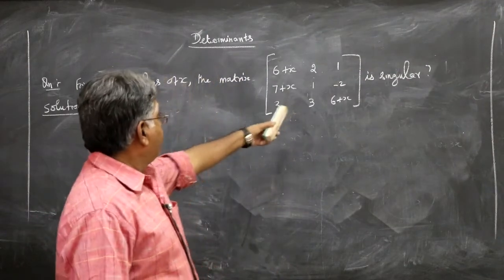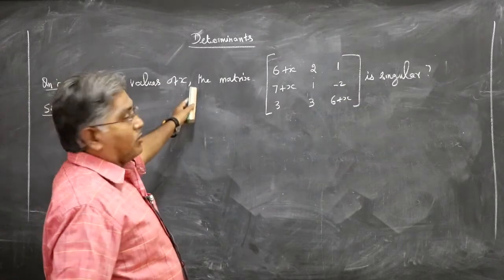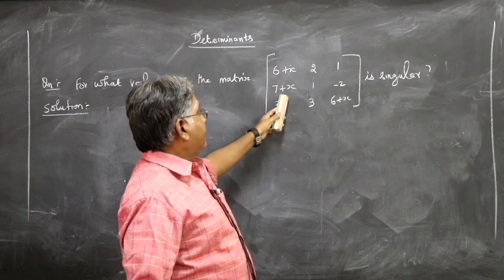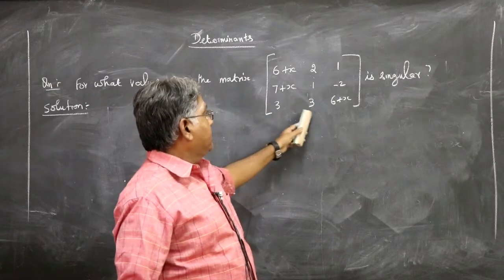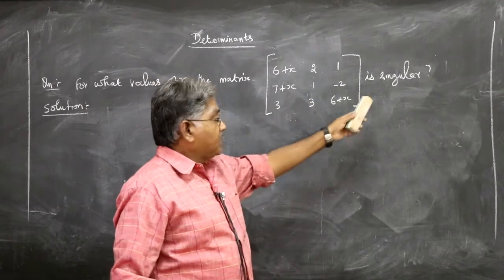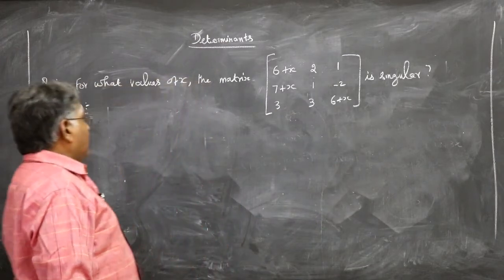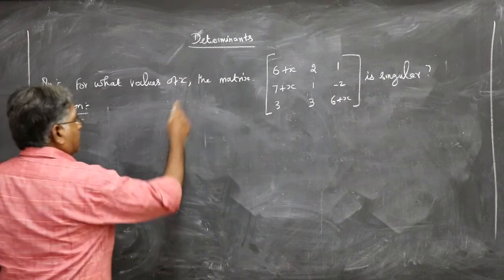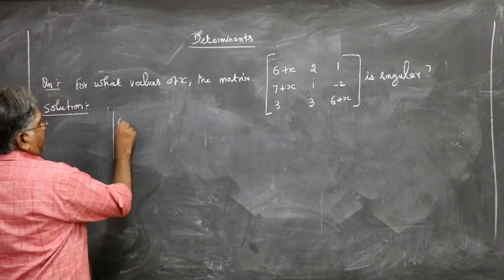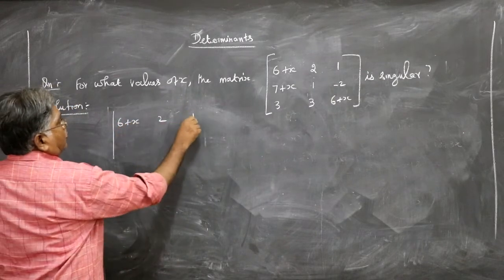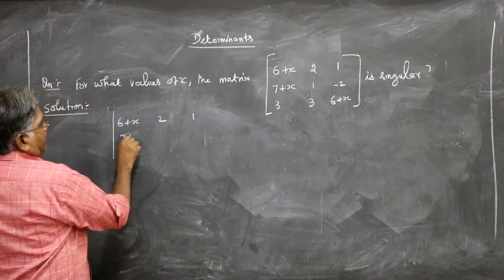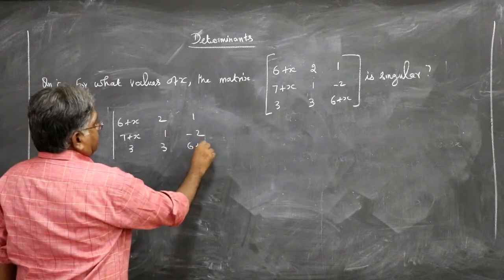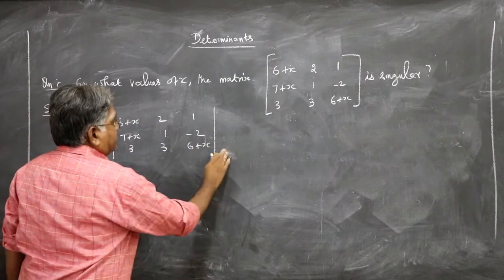Next question: for what values of x is the matrix [6+x, 2, 1; 7+x, 1, -2; 3, 3, 6+x] singular? What you do is evaluate the determinant equal to 0 and solve for x. The determinant of the matrix is: 6+x, 2, 1 / 7+x, 1, -2 / 3, 3, 6+x.